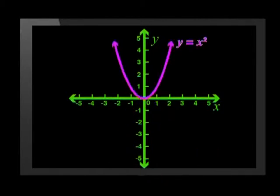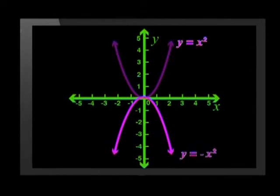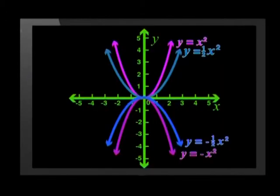Right, so you saw that if we reflect the parent graph over the x-axis, the new graph we make has an A value of negative 1. So, if you know what y equals half x squared looks like, I mean, how fat or thin it is, then we can tell how fat or thin y equals negative half x squared is. Great thinking.